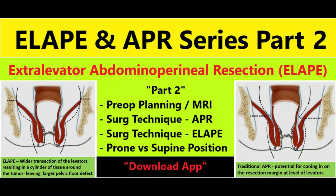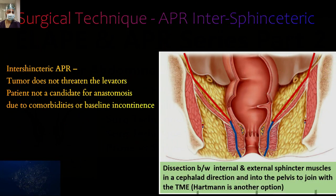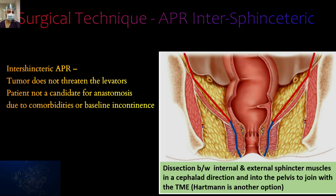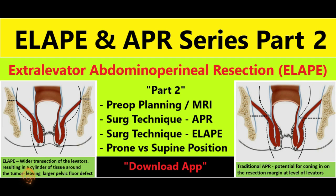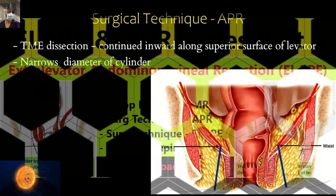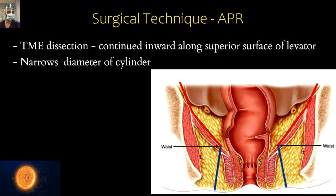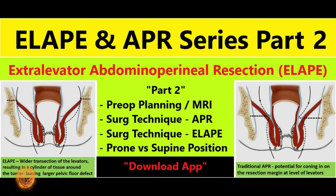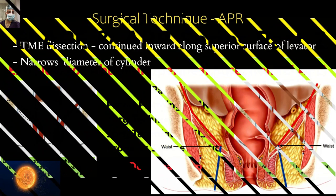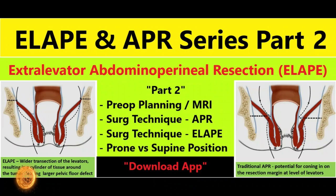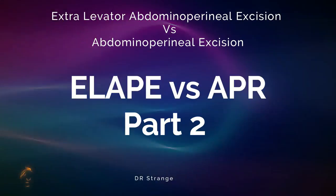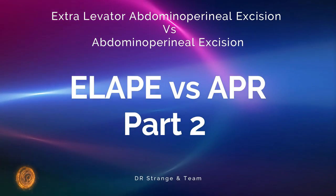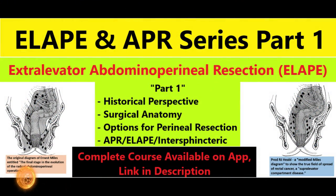Welcome back. This is the second part of our Extra Levator Abdominal Perineal Excision series - that is ELAPE versus APR, how to choose. We'll carry forward the discussion from Part 1. In this part we are going to talk about preoperative planning, the surgical techniques, and the prone versus supine position.